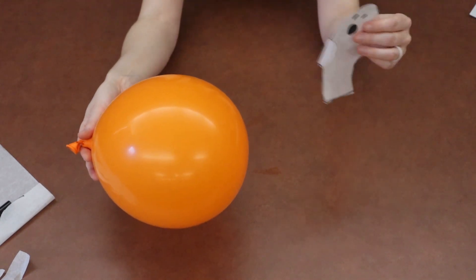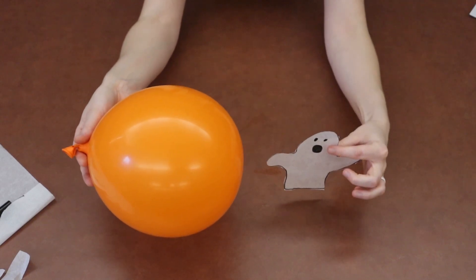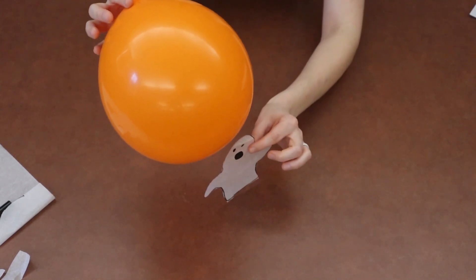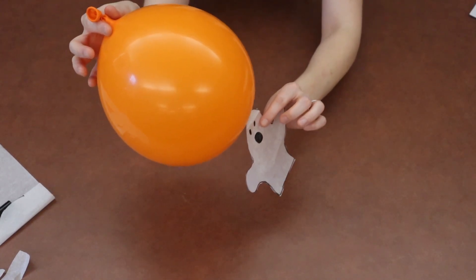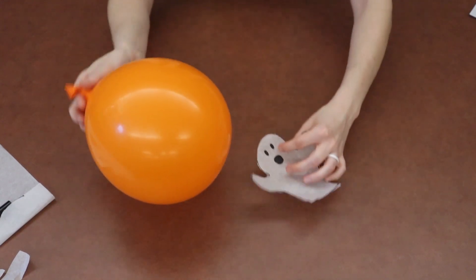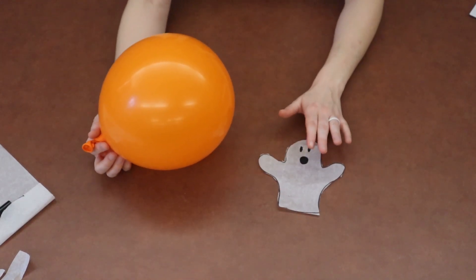So we have a charged balloon and a not charged ghost. So when we try to touch them, what's going to happen is our ghost is going to want to stick to our balloon. And that is what is going to make our ghost dance.